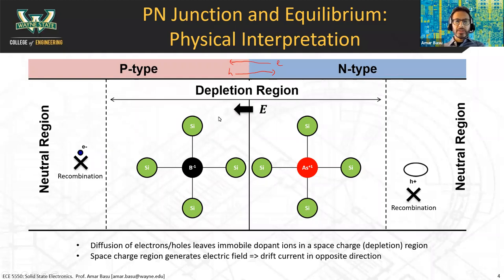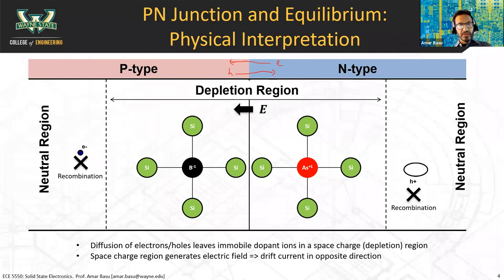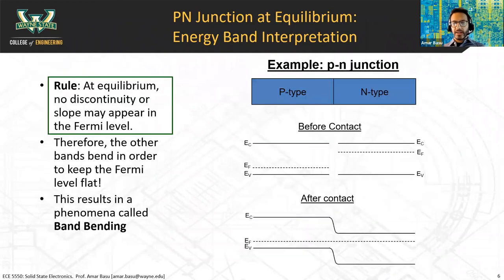The electric field causes drift current to happen. Electrons drift opposite the electric field; holes drift in the same direction as the electric field. Overall, electrons diffuse from right to left but drift from left to right. Holes similarly diffuse from left to right but drift from right to left. At equilibrium, the drift and diffusion currents balance each other, so electron drift plus electron diffusion sum to zero, and hole drift plus hole diffusion sum to zero.